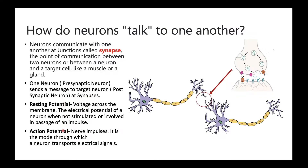We will explain two terms: resting potential and action potential. Resting potential is the voltage across the membrane — similar to the concept of potential energy. The nerve impulse is the stimulating signal and is the mode through which a neuron transports electrical signals.